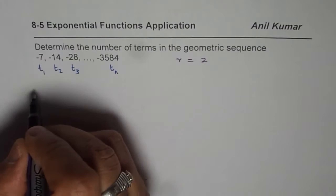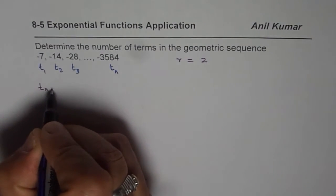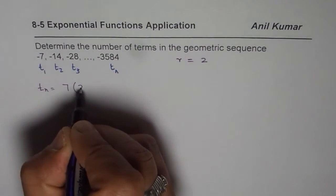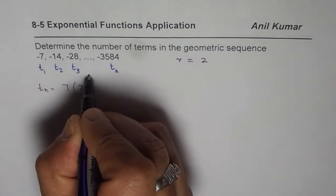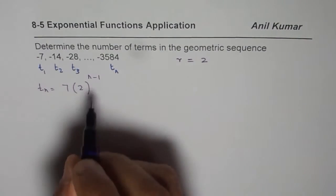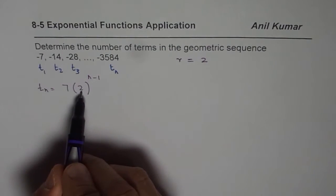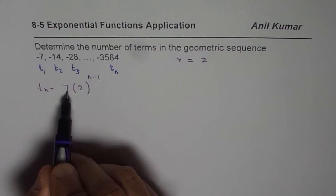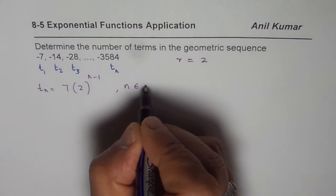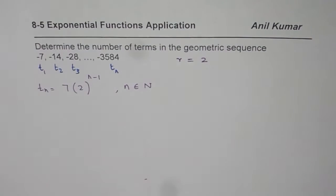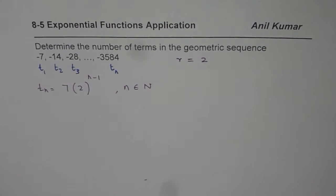So we can write a general term here: tn equals minus 7 times 2 to the power of n minus 1. We use n minus 1 because for the first term, you don't have to multiply by 2, the number is just 7. Where n belongs to natural numbers. So for any geometric sequence, n is a natural number. So that is the formula, which we generated, we don't really have to remember it.